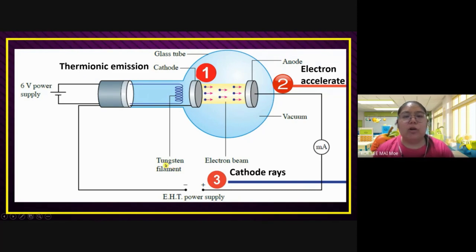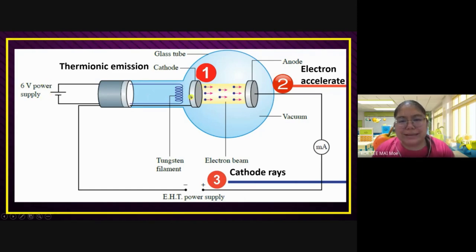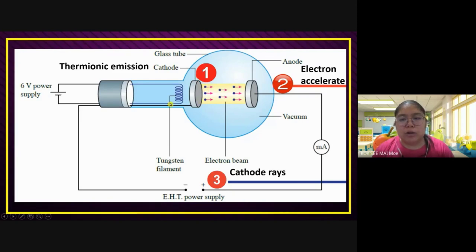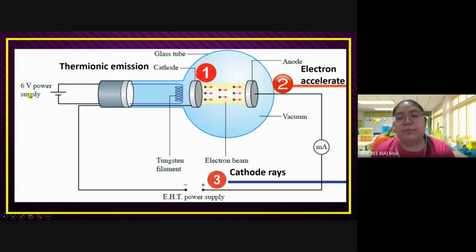Then the electron will go to the cathode. The electron starts at the cathode. So you need to heat — the heat is provided by the six volts. But the electrons now can only move on the surface, only on the cathode surface. From here, if you want the electron to accelerate to the anode, the six volts is not enough. There's not enough energy for the electron to continue to accelerate.